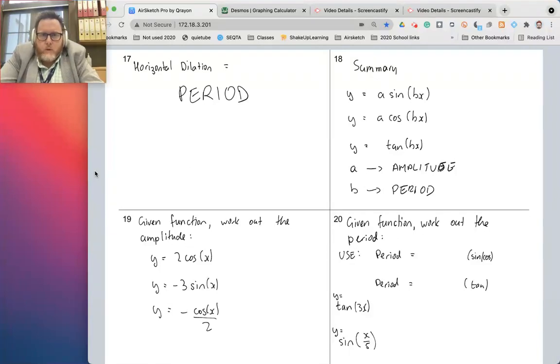I promise this video will be much shorter than the other ones. Last video, we had a look at transformations and were introduced to the idea of amplitude and period. The summary is here for you, where I finish off by saying that if you've got this form of the sine, cosine, tan function, then A would impact the amplitude and B would impact the period.